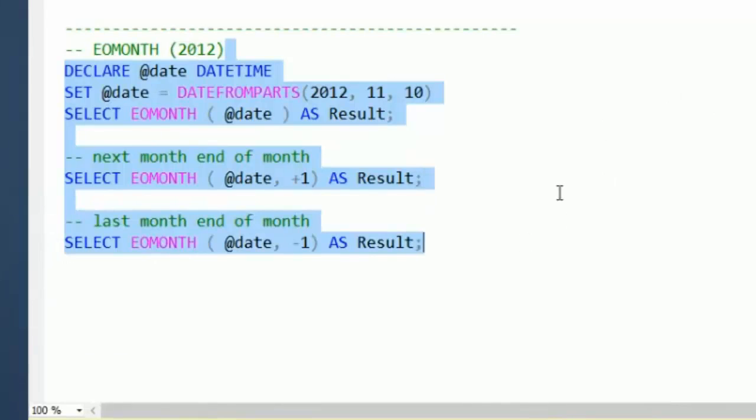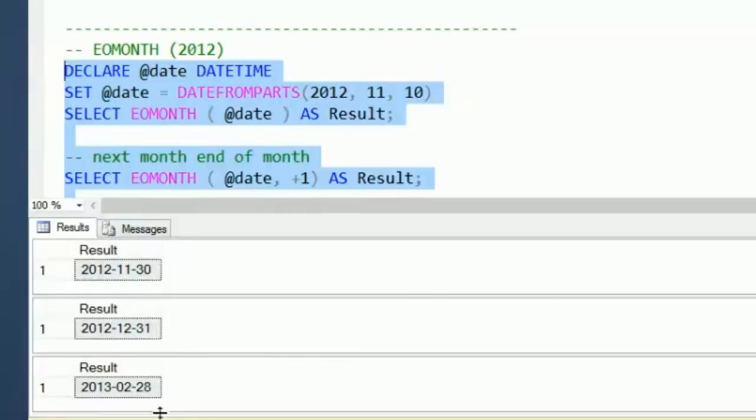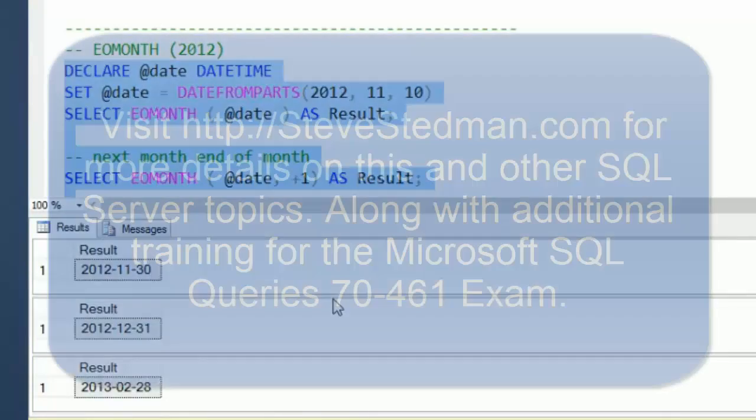And now if we want to go, instead of minus one it would go back to October, but let's do plus three if I'm doing my math correctly. That will put us into February and calculate February 28th, and that will keep in account leap year calculations as well.